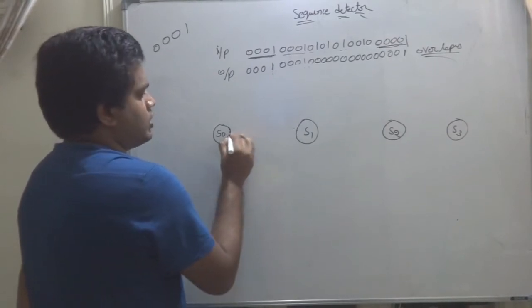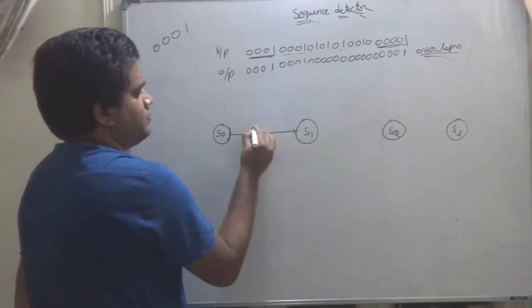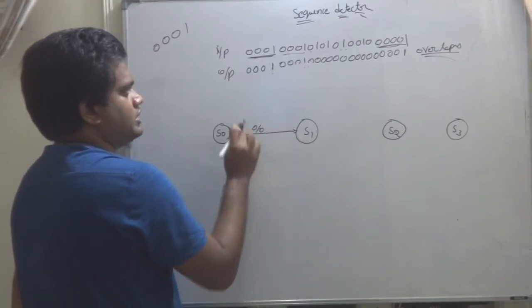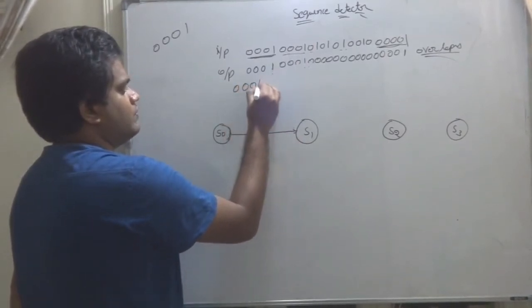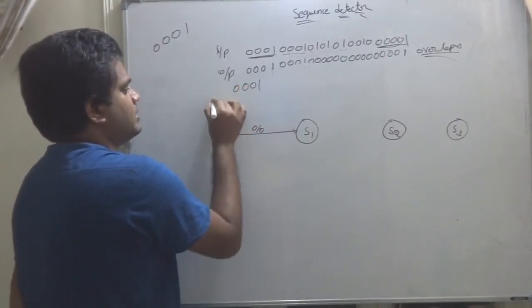Then, if 0 comes, it will go to this state, S1, because sequence in detector, your sequence is 001. If 1 comes, you will stay in same state.